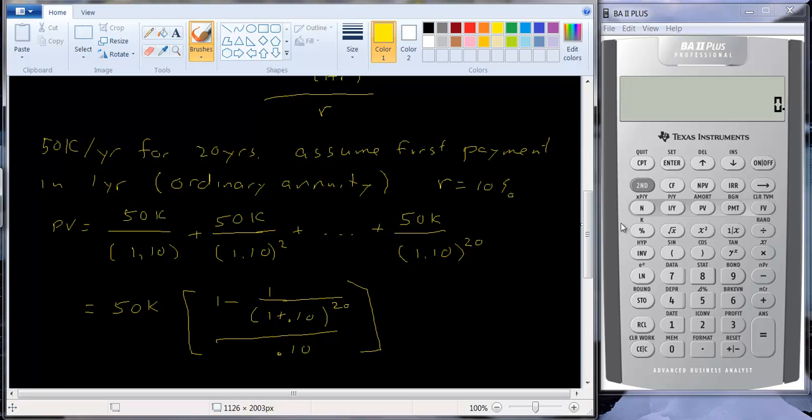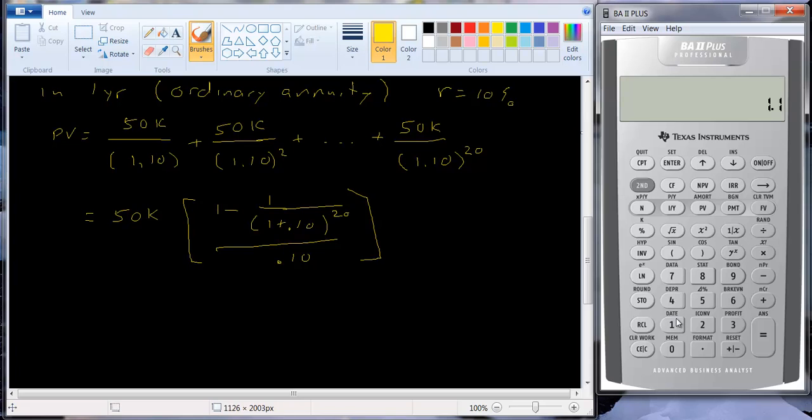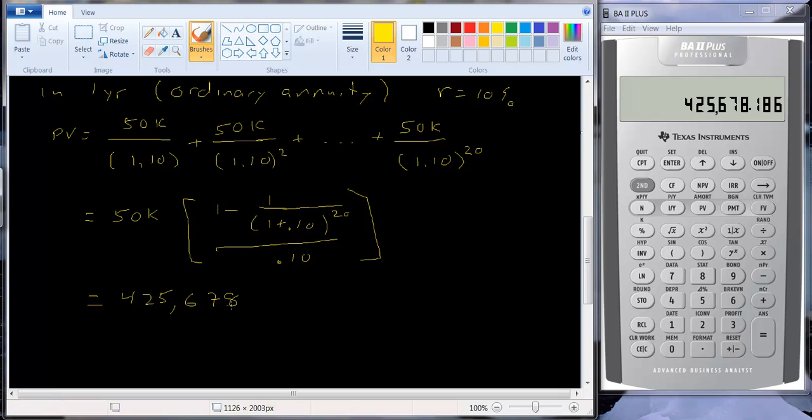So let's see what that factor is. Let's work that out. 1.1 raised to the 20th power is 6.727. But we want 1 over that, so we can hit the 1 over x key and that will flip it over. And then we want to subtract this number from 1. So let's just hit the plus minus key, make it negative, and add 1 to it. And then we divide by 0.1. And then we can multiply that times the 50,000, and we get 425,678.19. So quite easily computed, and nice to use this formula.